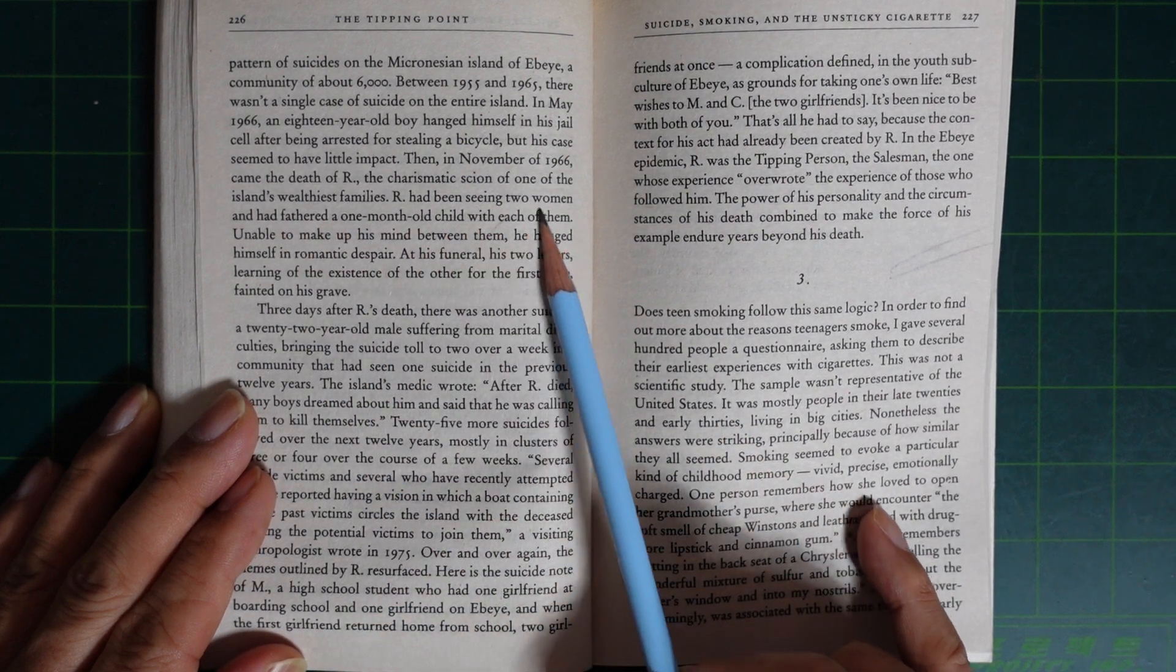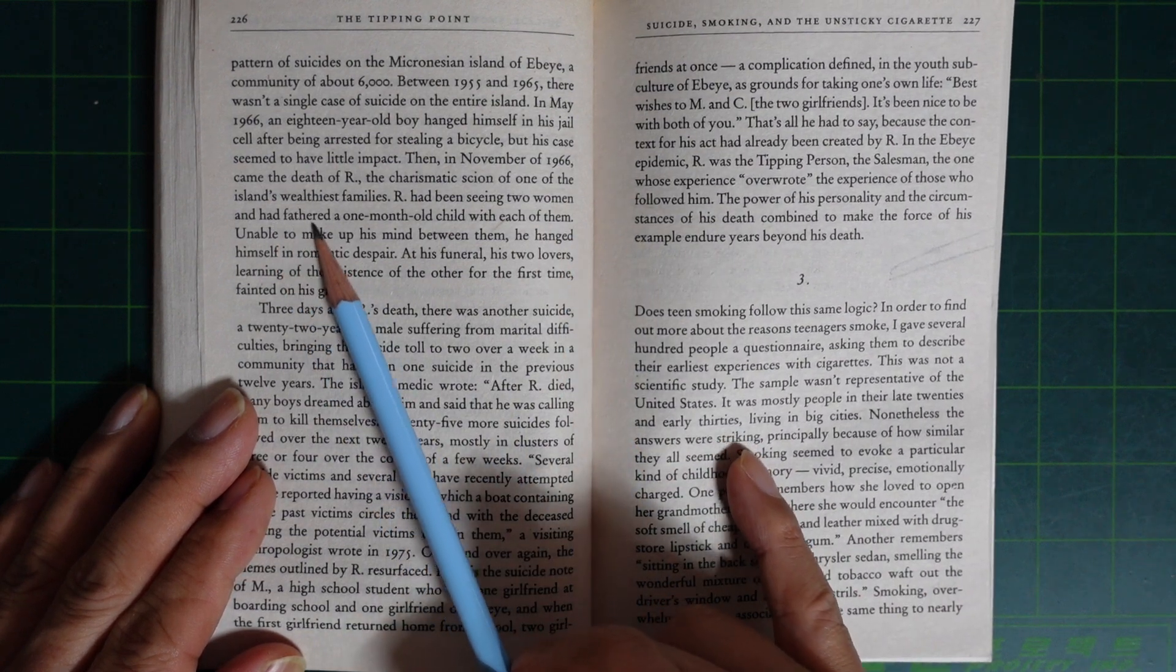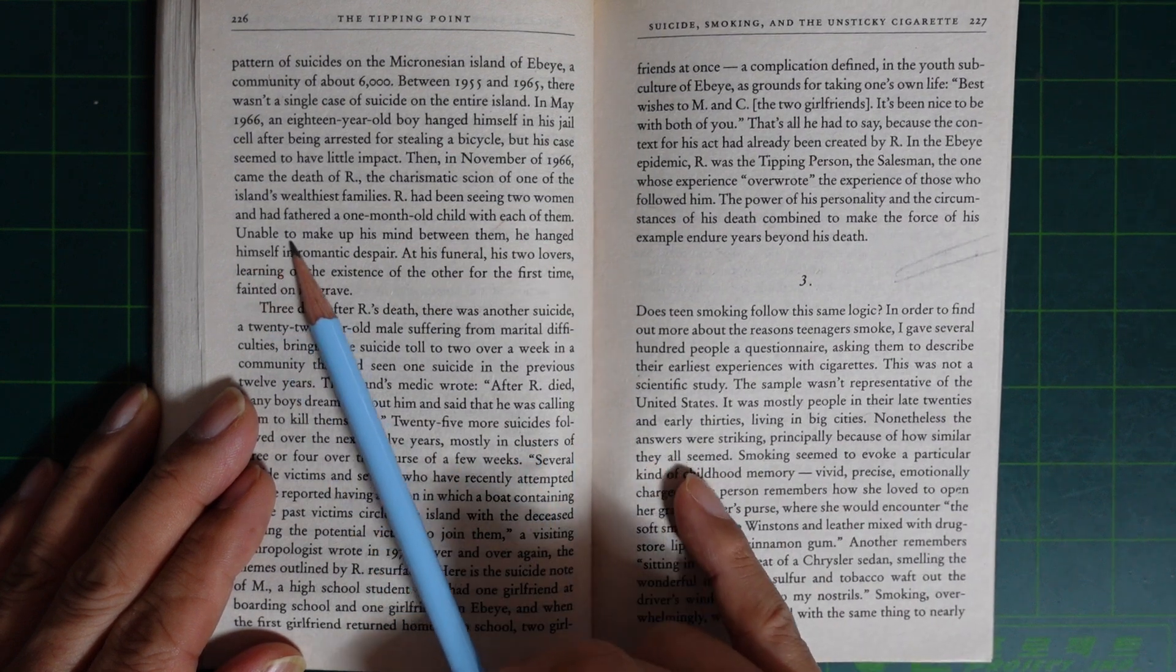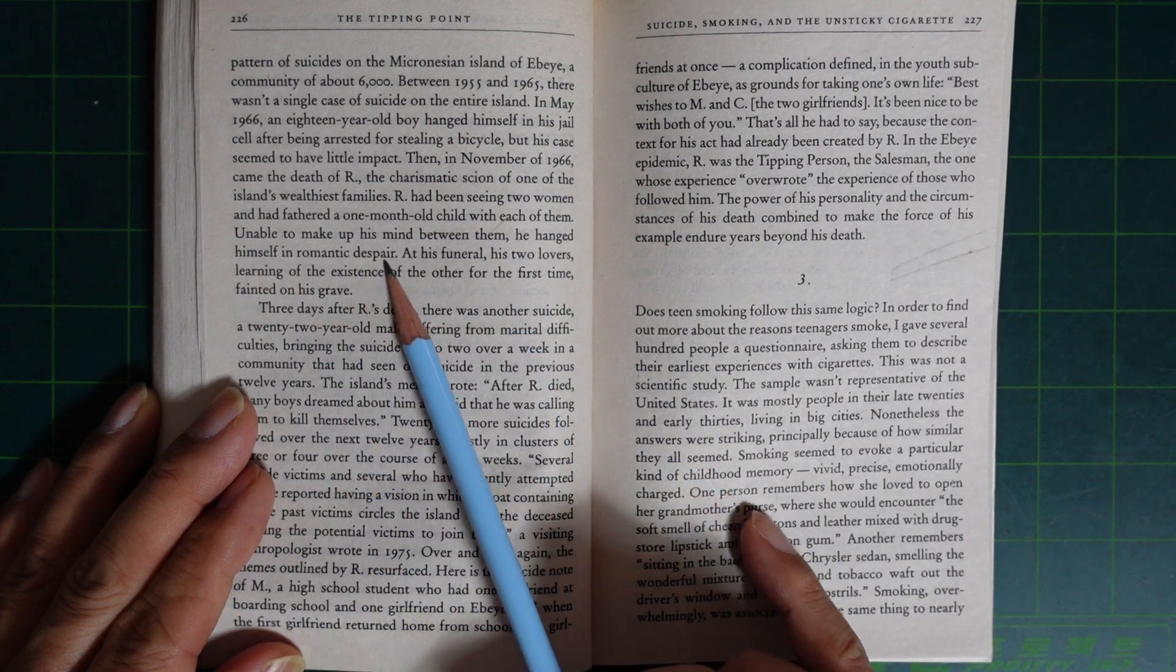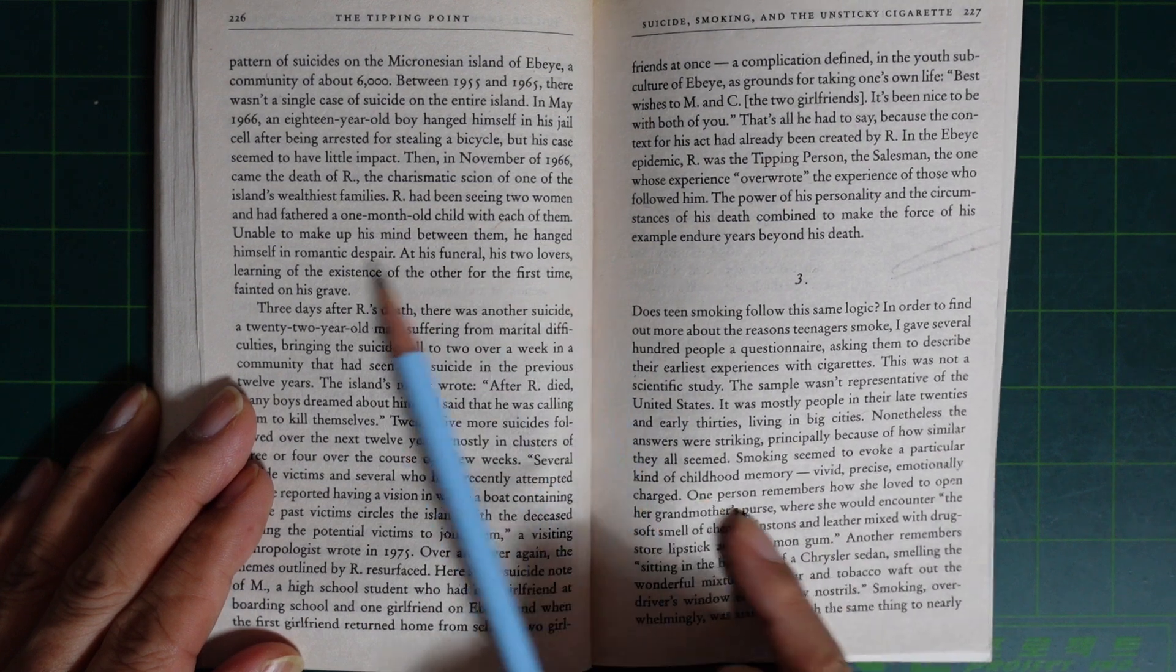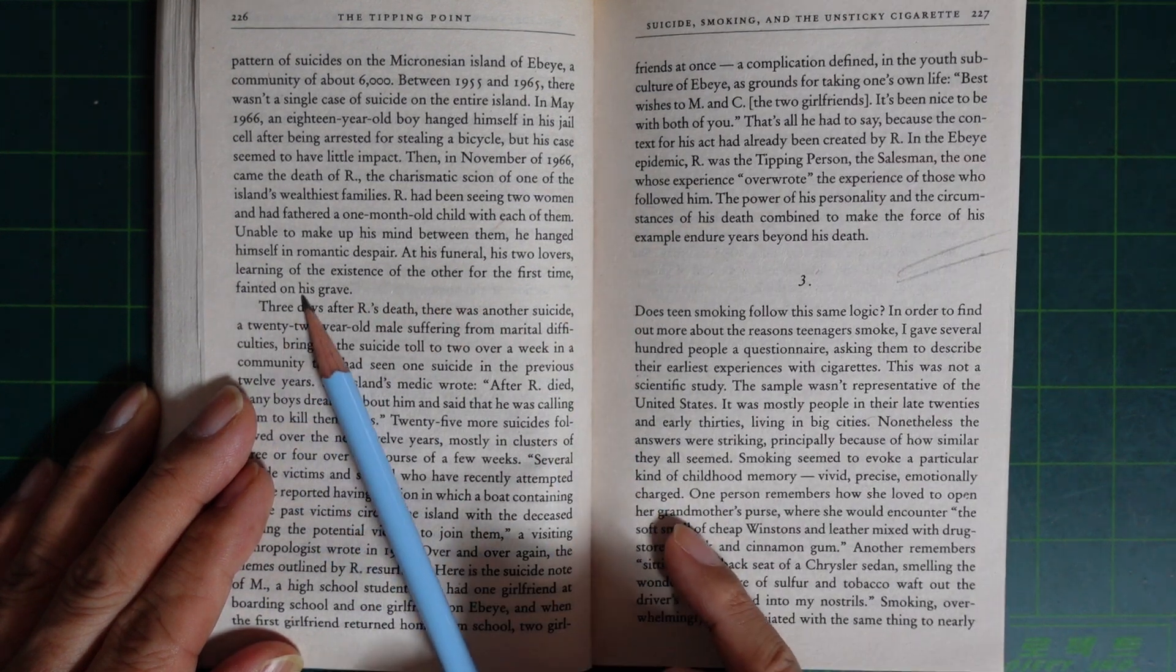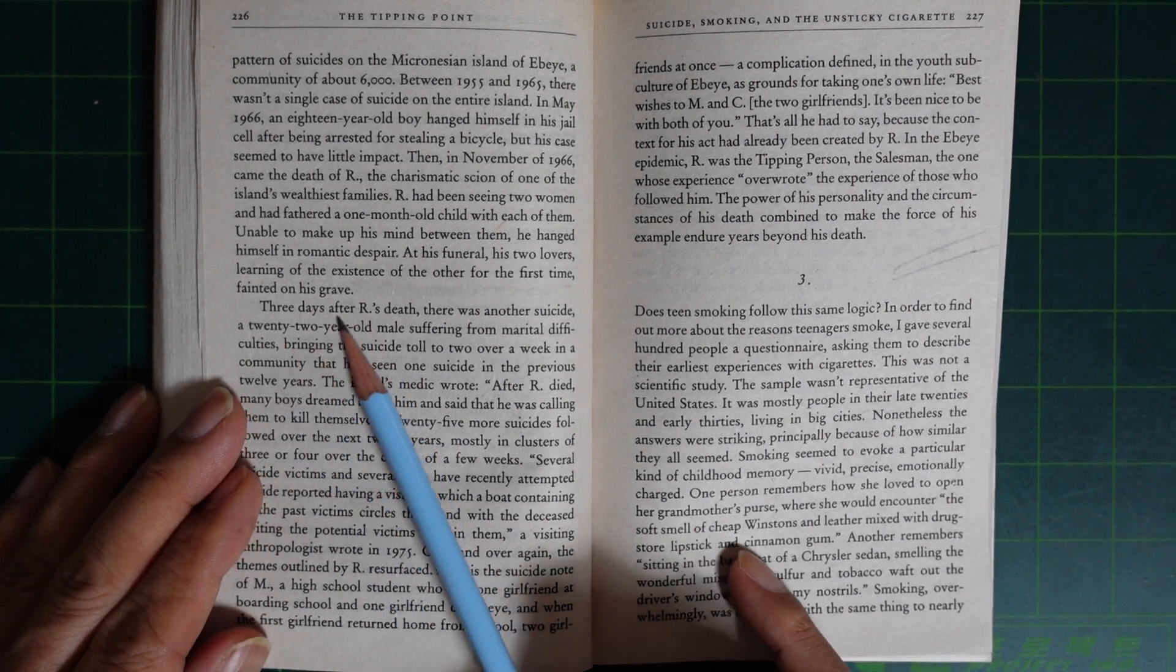R had been seeing two women and had fathered one child with each of them. Unable to make up his mind between them, he hanged himself in romantic despair. At his funeral, his two lovers, learning of the existence of the other for the first time, fought over his grave. Three days after R's death, there was another suicide.